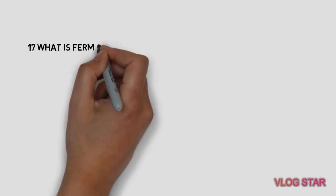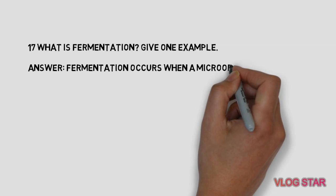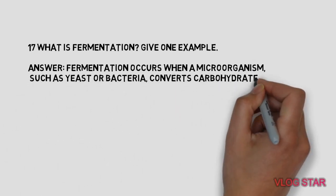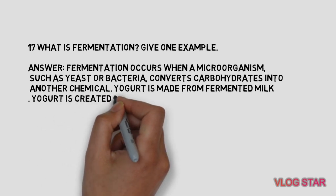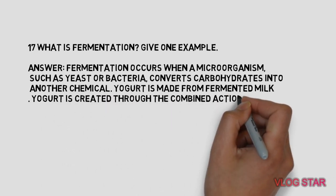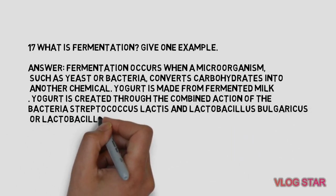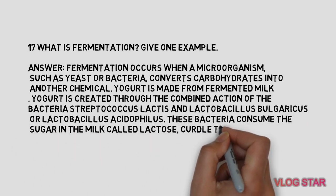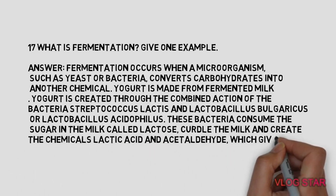What is fermentation? Give one example. Fermentation occurs when a microorganism, such as yeast or bacteria, converts carbohydrates into another chemical. For example, yogurt is made from fermented milk, created through the combined action of the bacteria Streptococcus lactis and Lactobacillus bulgaricus or Lactobacillus acidophilus. These bacteria consume lactose, curdle the milk, and create lactic acid and acetaldehyde, which give yogurt its distinctive taste.